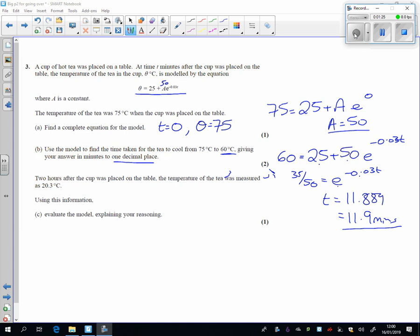Two hours after the cup of tea was placed on the table, it was measured at 20.3. So let's see what happens at two hours. What should it have been? Let's throw two hours into our formula. Of course, two hours is 120 minutes, and tapping that into the 120 minutes gives us that theta should actually have been, according to the model, 26.4 degrees.